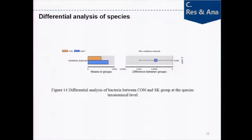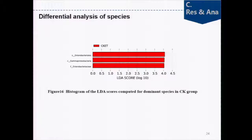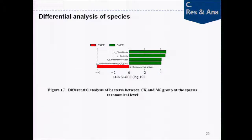Differential analysis at the species level showed one species with significant difference between CON and SK. A histogram of LDA scores shows dominant species in the SK group — there are five species. In CK, there are three dominant species. Differential analysis between CK and SK found five species with significant differences.